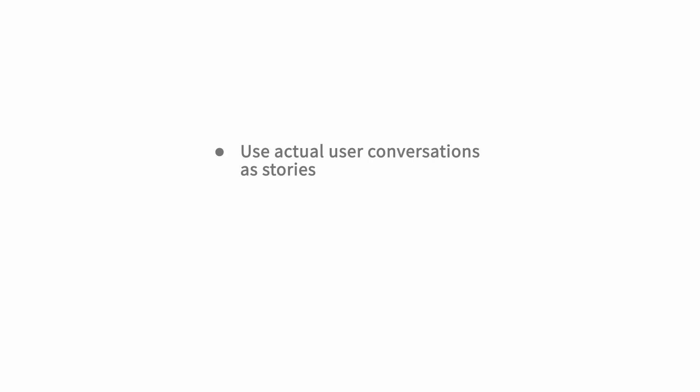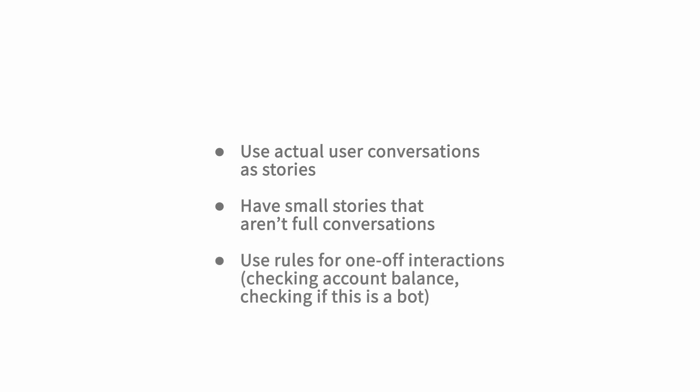Those are the ways to help your assistant know the order to have conversations. A few things to keep in mind: use actual user conversations as stories — in RasaX there's a simple way to save a conversation as a story. Do have small stories that aren't full conversations; you can have just little snippets and they don't all have to be full interactions from top to bottom — they'll be recombined during training. And if you have a one-off interaction, use a rule for that — things like checking an account balance or asking 'are you a bot?'